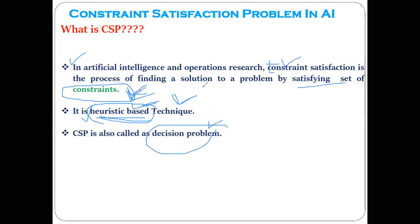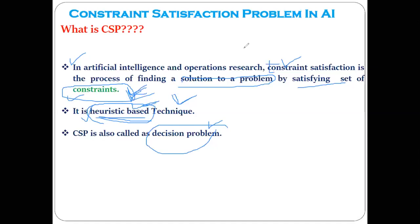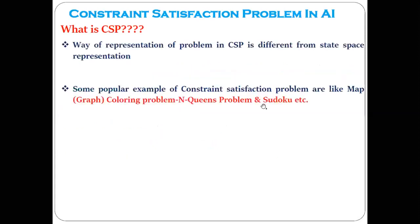The definition says it is the process of finding the solution to a problem — we can find the solution only when certain constraints or rules get satisfied. This is different from the state space representation approach; we'll understand how when we see examples related to the constraint satisfaction problem.